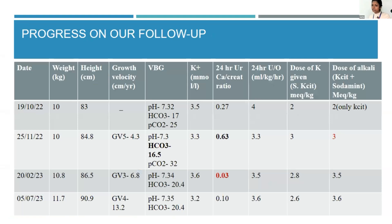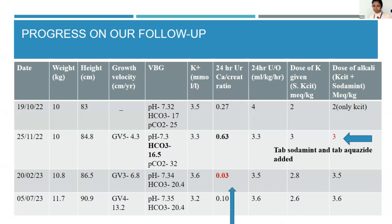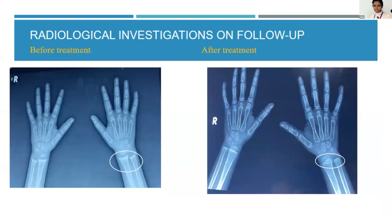She was treated with alkali supplementation in the form of potassium citrate, and later sodium bicarbonate tablets were added as well. The dose was slowly titrated with guidance from blood gas parameters. When the urine calcium-to-citrate ratio was elevated, hydrochlorothiazide was added and later stopped. Growth improved subsequently, as did the blood gas parameters. Follow-up radiographs at 9 months after therapy showed that the rachitic changes had been improving radiographically as well.